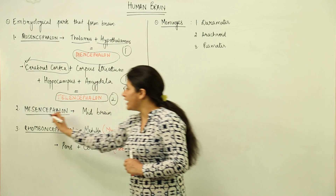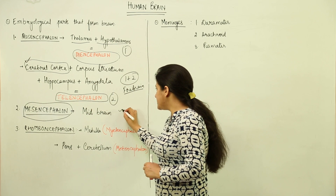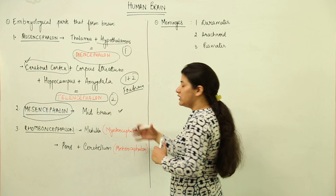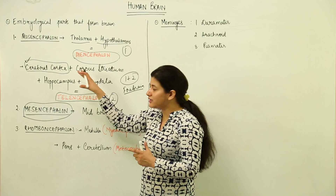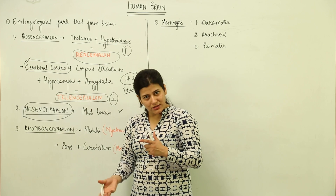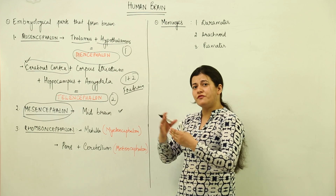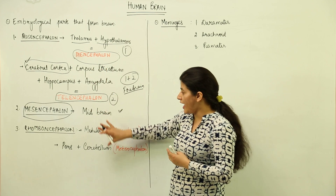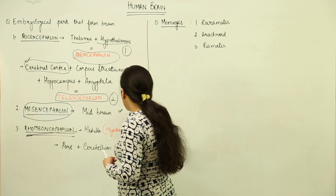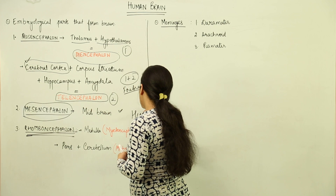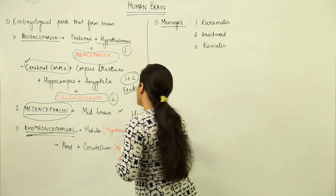Coming to the midbrain, it is derived from mesencephalon. The midbrain is actually the simplest of all parts — it does not have many designated sub-parts. It acts as a sort of connection between the forebrain and the hindbrain.